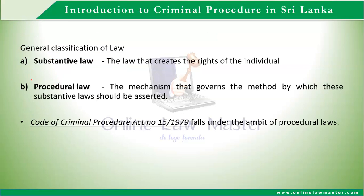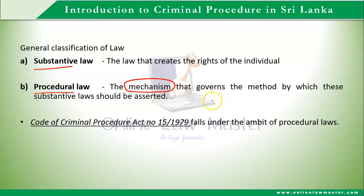For criminal procedure, we can classify it into two types. The substantive law is the law that creates the rights of the individual. Procedural law is the mechanism that governs the method by which these substantive laws should be asserted. The Code of Criminal Procedure Act falls under the ambit of procedural law.